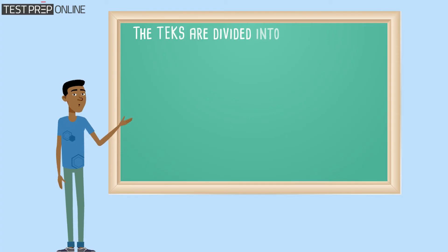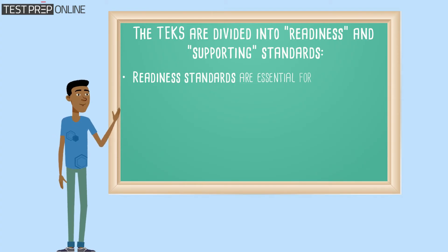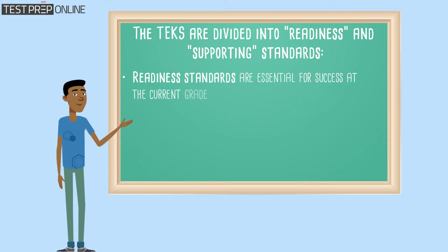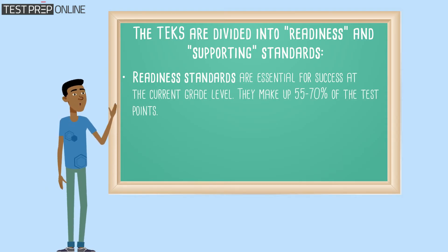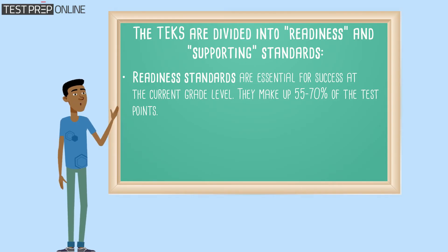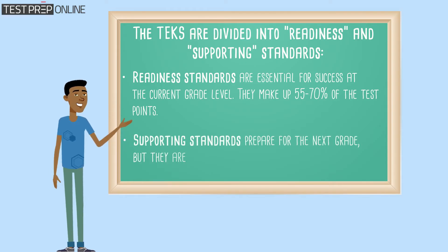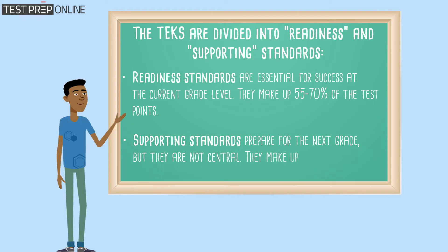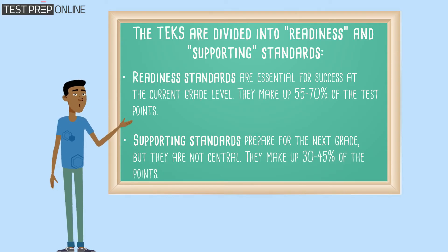The TEKS are divided into readiness and supporting standards. Readiness standards are essential for success at the current grade level and make up 55–70% of the test points. Supporting standards prepare students for the next grade, but they are not central, making up 30–45% of the points.